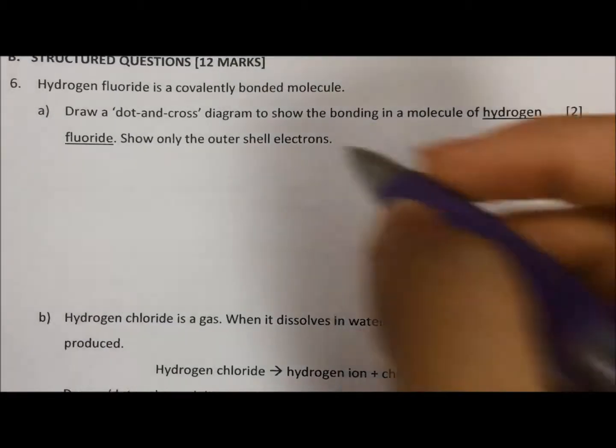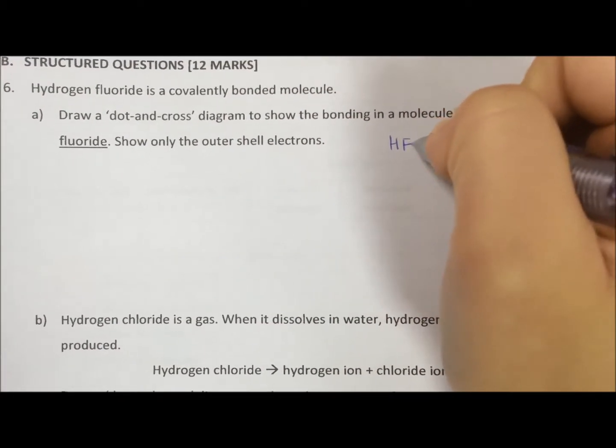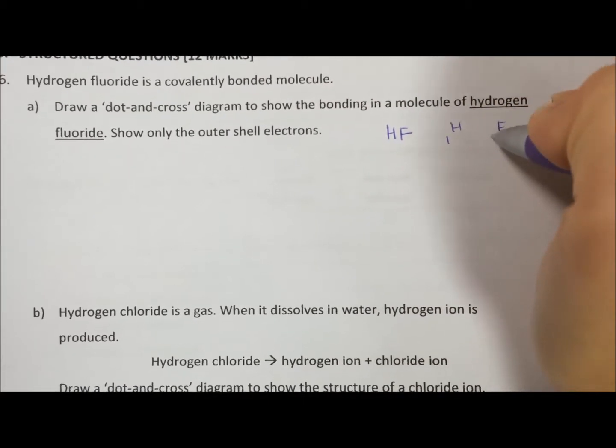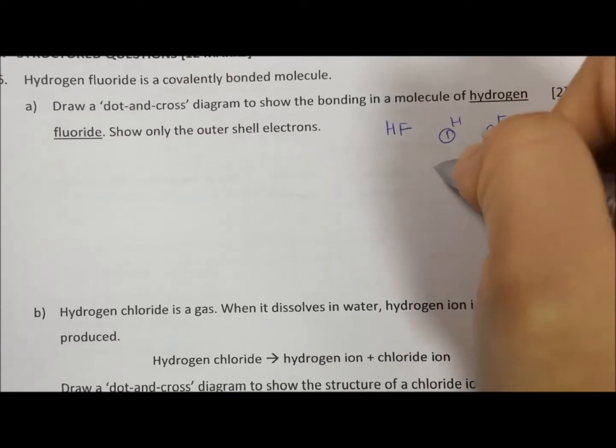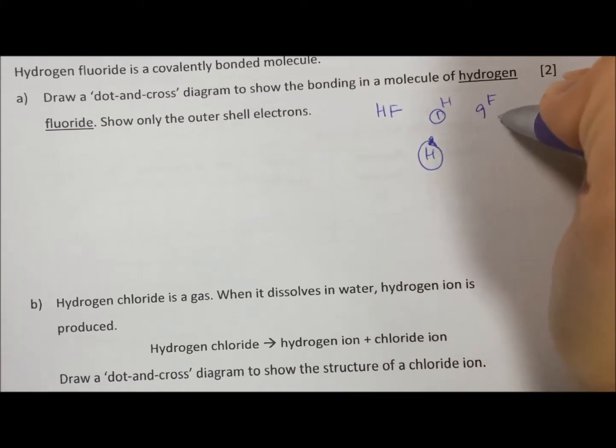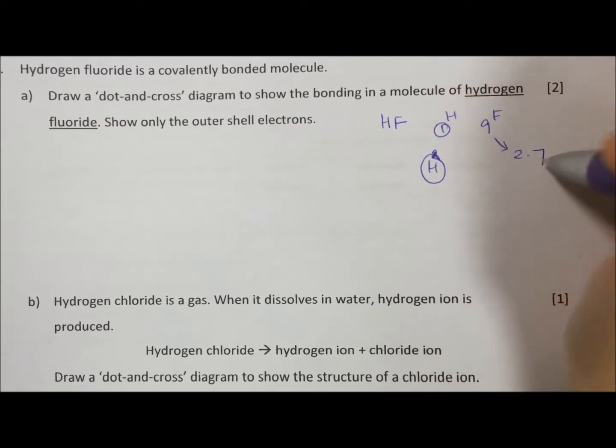Question 6, they ask you to draw hydrogen fluoride, HF. So hydrogen has one electron, fluorine has nine electrons. They say to show only the outer shell. So first we draw one hydrogen, one electron for hydrogen. Fluorine is 2.7.